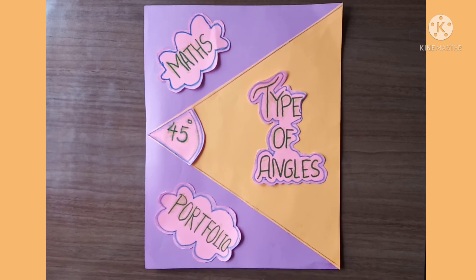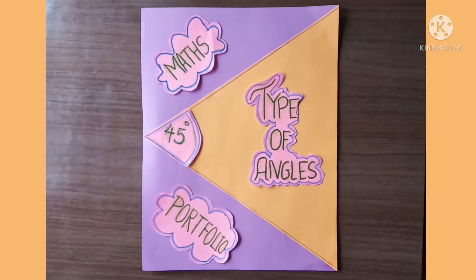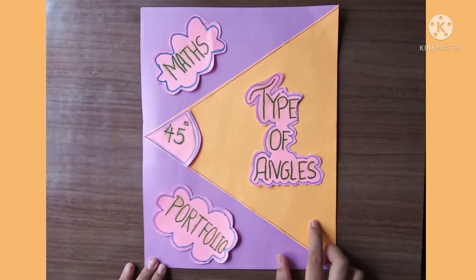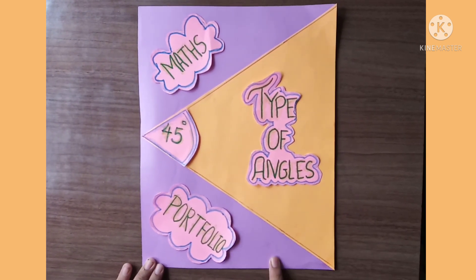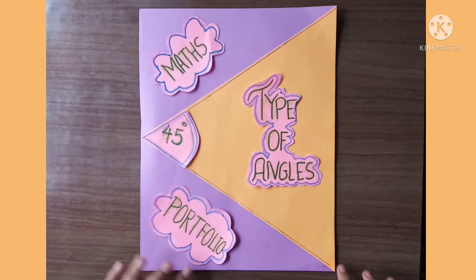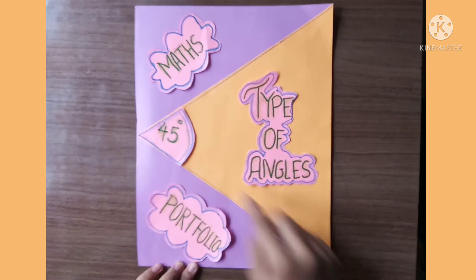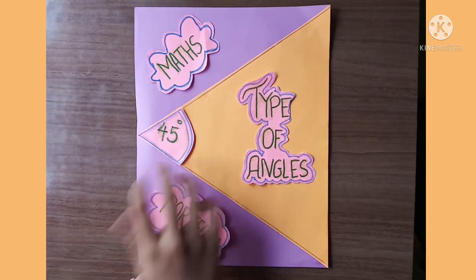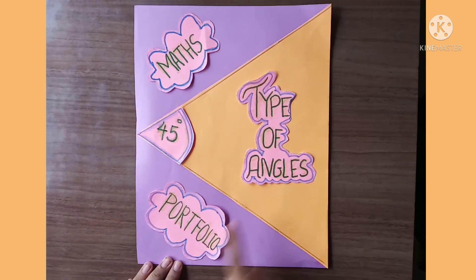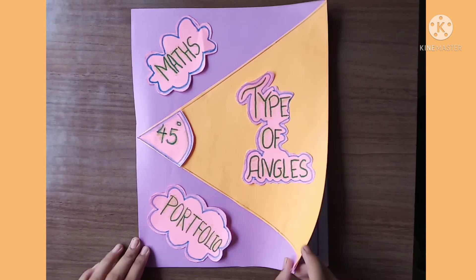Here is my math portfolio and do you know how I made it? I took two color sheets — one orange and one purple — and on the purple sheet I taped the orange color sheet. I cut it into a triangular shape to make an angle. Here I have written 'Math Portfolio' and here I have written 'Types of Angles'.